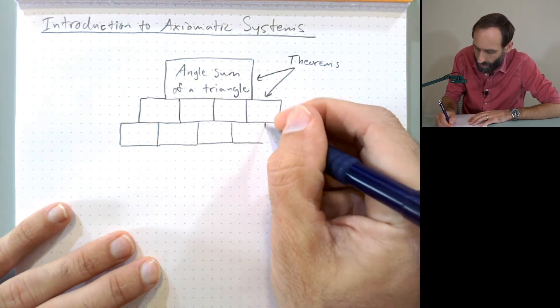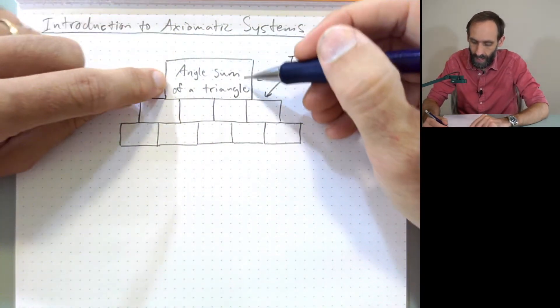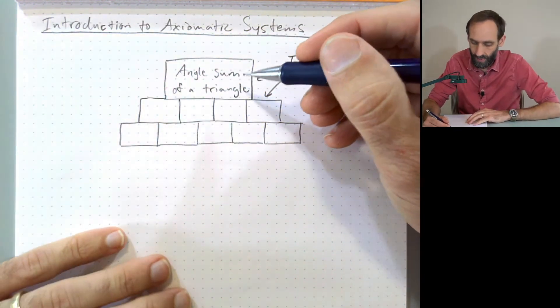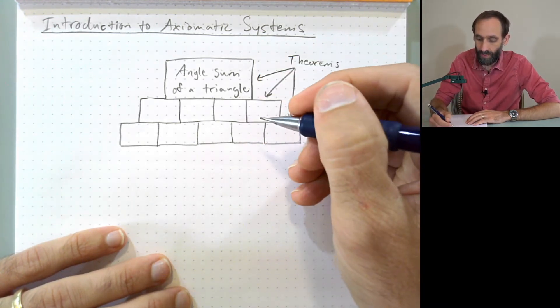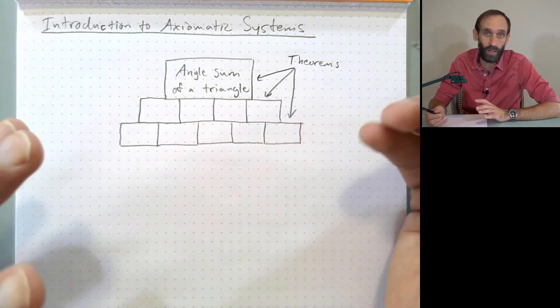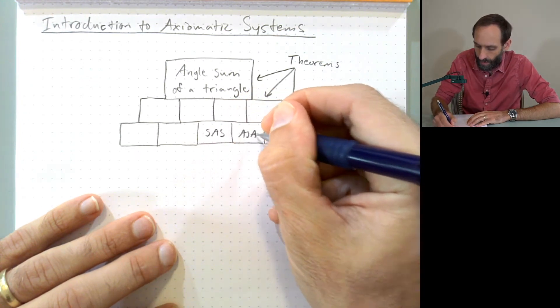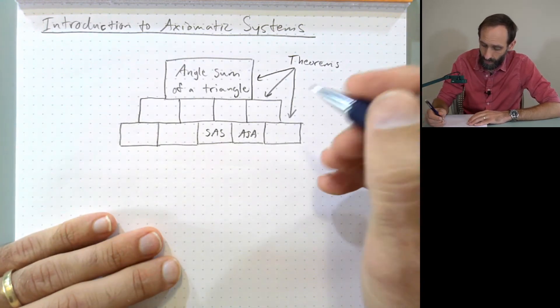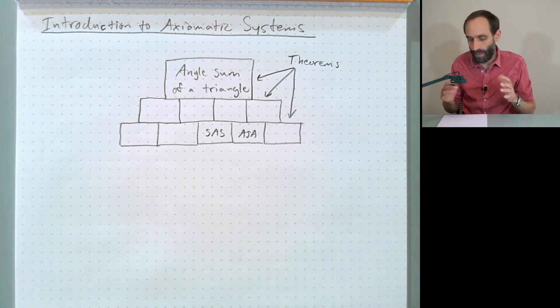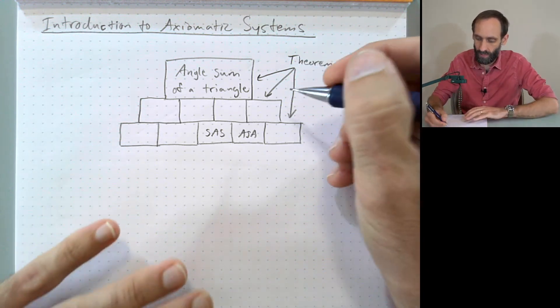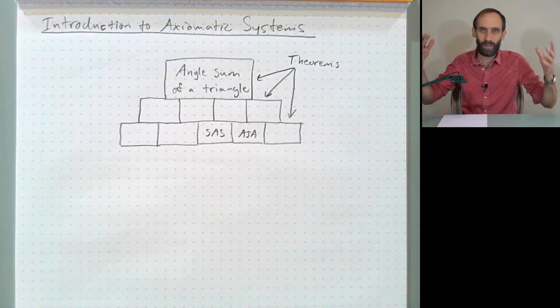For example, you've probably heard of the Pythagorean theorem. It turns out the Pythagorean theorem is a theorem that's built on top of, it takes a place above the angle sum of a triangle theorem. And below angle sum of a triangle, we have theorems about triangle equality. For example, you may have heard about things like SAS or ASA. So there are lots of different theorems. And you can actually, there's often multiple ways to structure this. But the point is, all these theorems make these bricks of the structure.